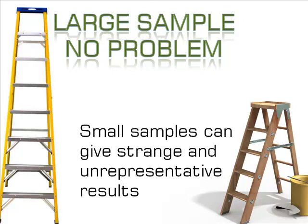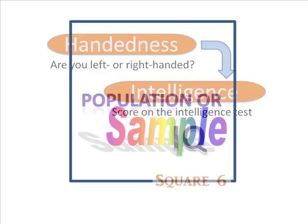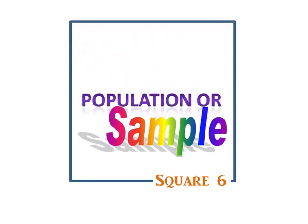You've got your variables — handedness and intelligence. And because you have limited funds, you now know you're going to use a sample. The next step is to select your victims.